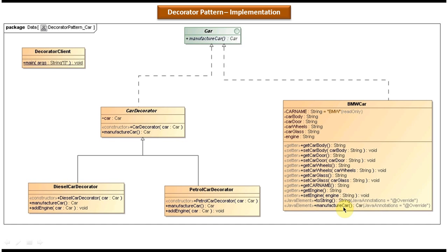The BMW car will have a car body, car door, car wheels, and car glass, but no engine. Next, the car decorator is an abstract class that also implements the car interface and provides an implementation of the manufactureCar method. This abstract class is extended by two concrete classes: the diesel car decorator and the petrol car decorator, both of which override the manufactureCar method.